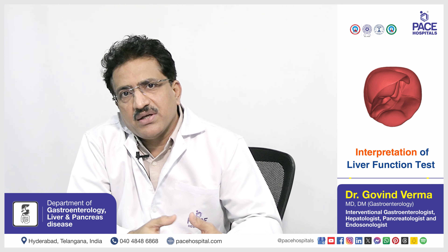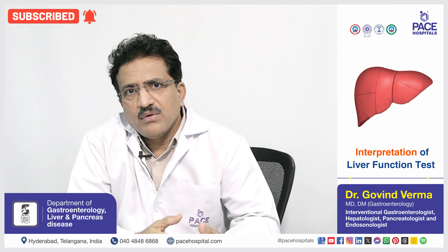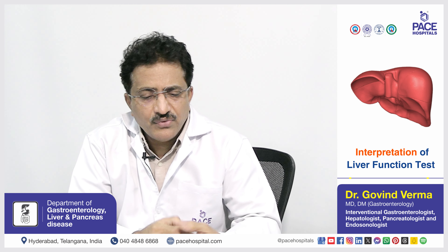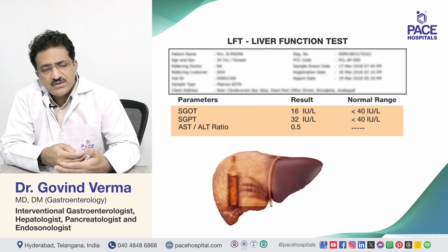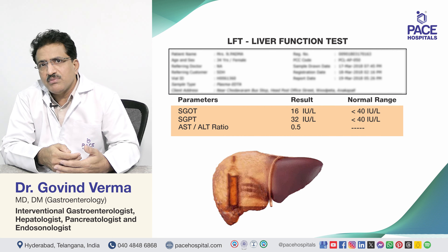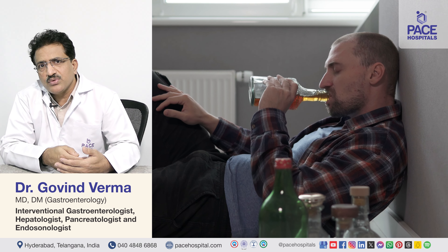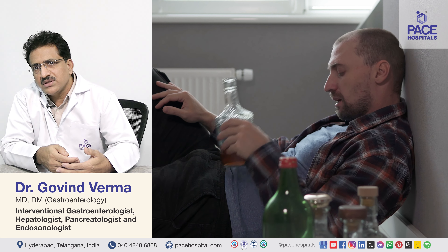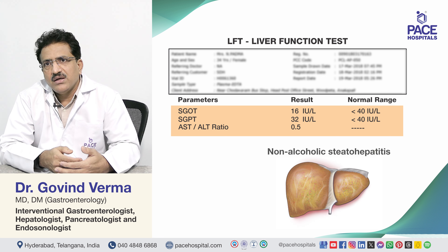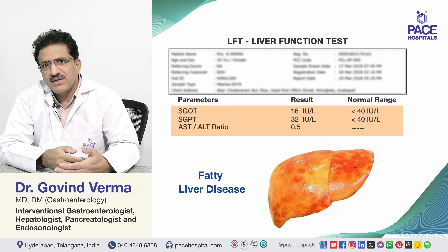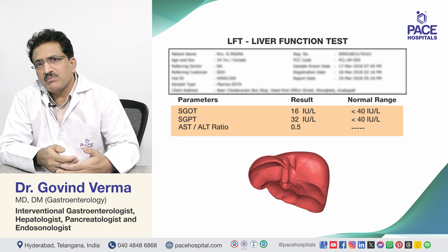Hepatologists interpret LFT based on patterns of enzyme elevation. If SGOT is more than double SGPT, alcohol is considered the likely cause — alcoholic liver disease. If SGPT is greater than SGOT, non-alcoholic steatohepatitis (NASH), simple fatty liver, autoimmune liver disease, drug-induced, or ischemic causes are considered. The ratio of SGOT to SGPT helps guide the differential diagnosis.